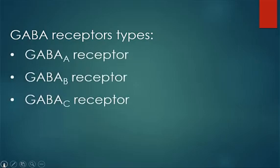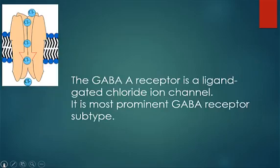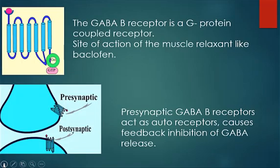The GABA-A receptor is a ligand-gated chloride ion channel and is the most prominent GABA receptor subtype. The GABA-B receptor is a G-protein coupled receptor. GABA-B receptors are the site of action of muscle relaxants like baclofen.